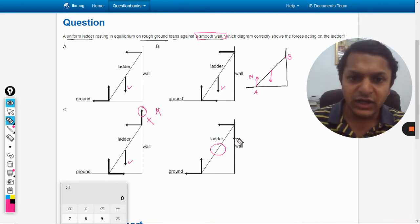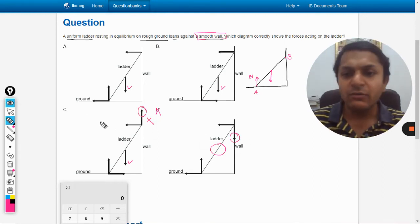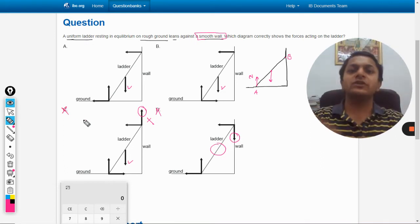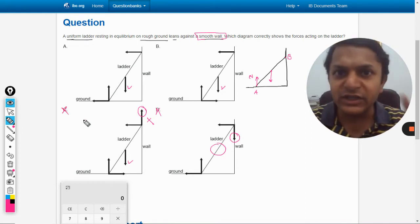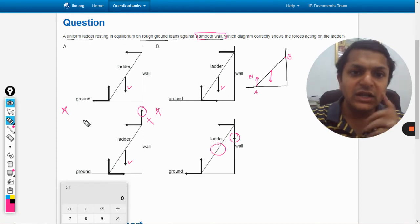So this is the upward force that is shown here at C, and this is the downward force. Both of them are not possible, so C is also wrong because the upward force cannot be there because there is no friction there.